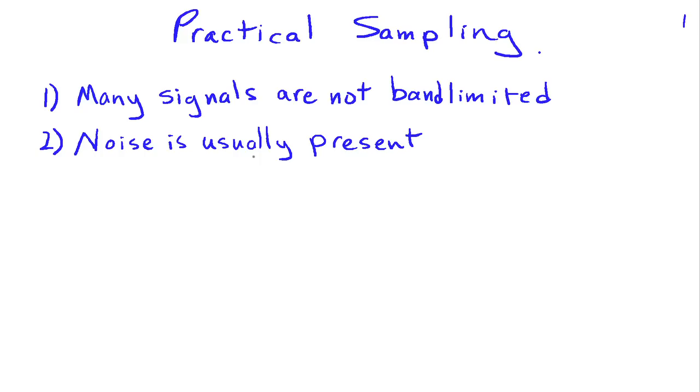So if we don't take this into account, the noise can alias back down into the signal band and that would be a bad thing to have happen. So what we typically do is we're going to insert a low-pass filter, which is called an anti-aliasing filter, before we actually sample the signal.